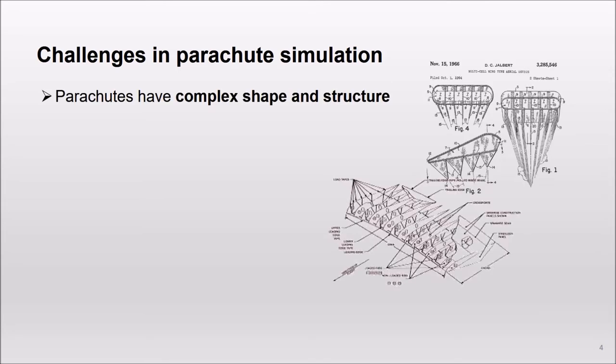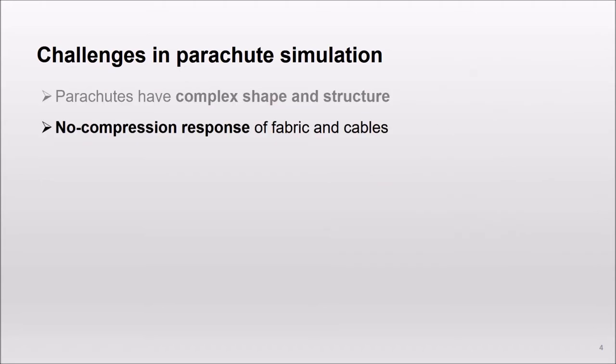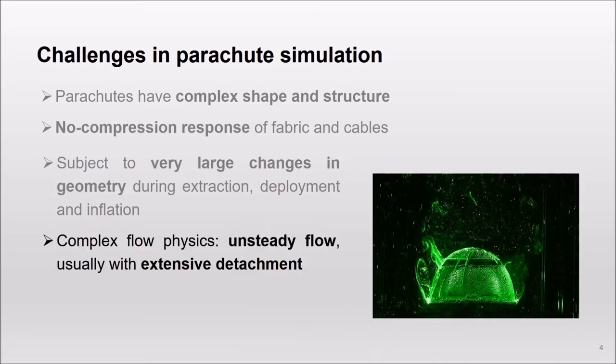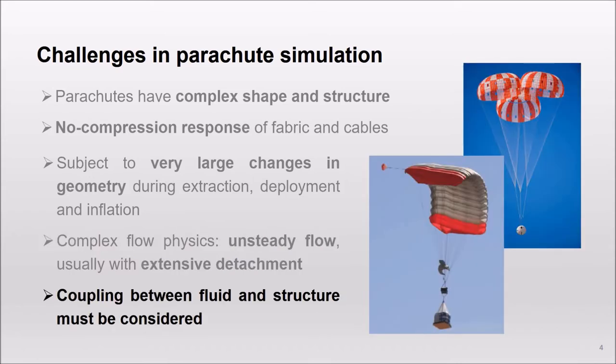I would like to start by pointing out some specific aspects of parachute simulation. Parachutes have complex shapes and structures. The materials wrinkle under compressive loads, showing asymmetric behavior. Parachutes are also subject to big changes in geometry through the different stages of flight. The flow around the parachute is complex and has considerable unsteadiness and detachment. Since there is a rapid response of the structure to changes in the aerodynamics and vice versa, coupled solution approaches are needed.